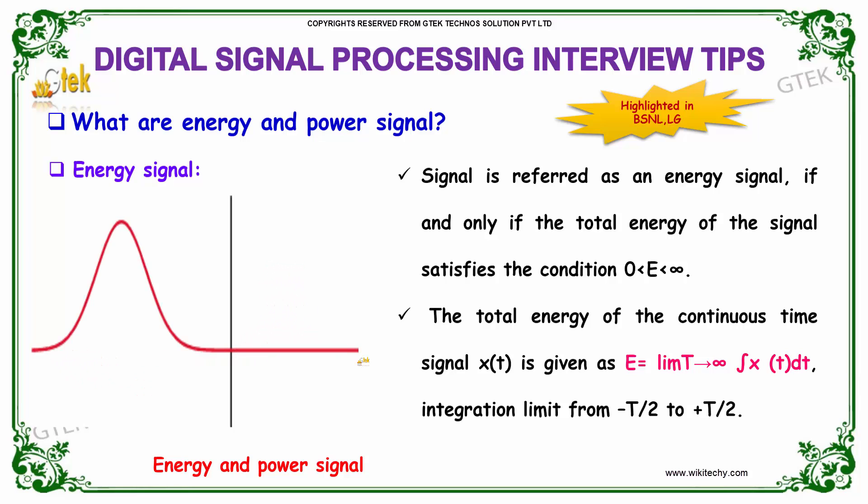Other than this, the total energy of the continuous time signal x of t is given as E equals to limit t tends to infinity integral x of t squared dt. The integration limit from minus t by 2 to plus t by 2.